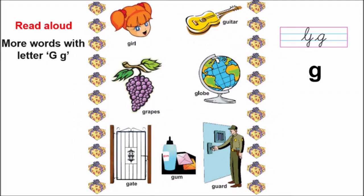So, children, now let us read words with letter G. But before that, children, do you see this arrow? Where is this arrow pointing? This arrow is pointing at capital cursive G. This is capital cursive G. And this is small cursive G. And this is small print G.